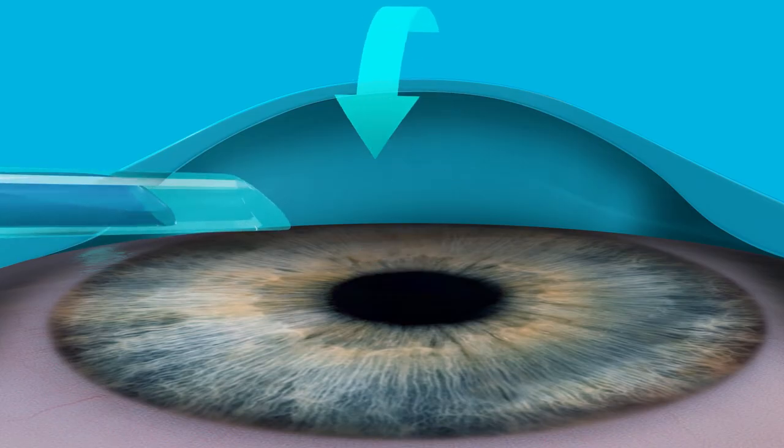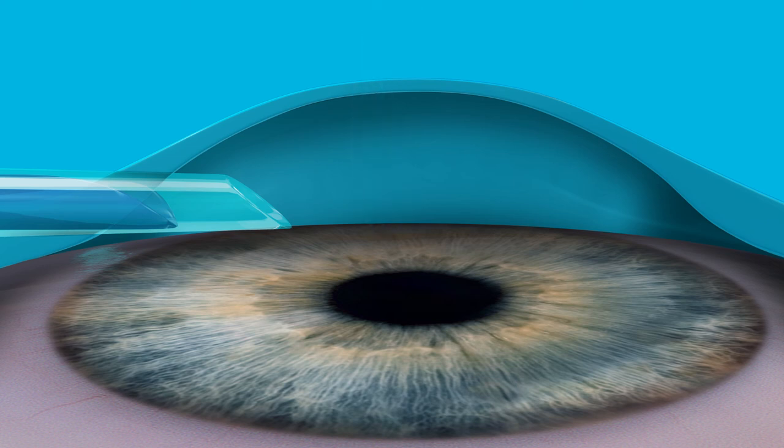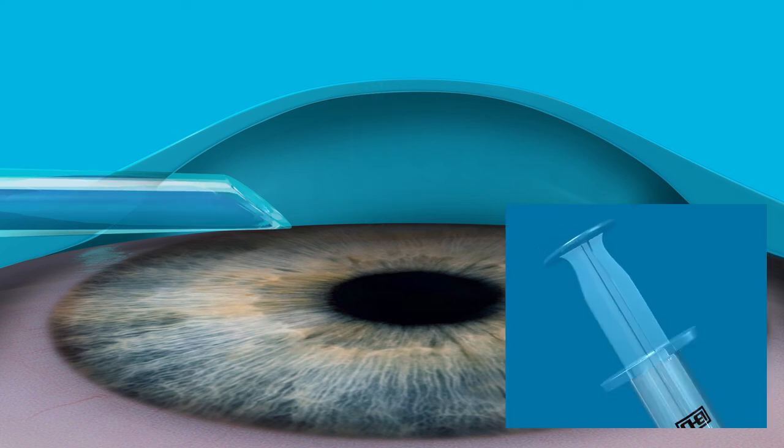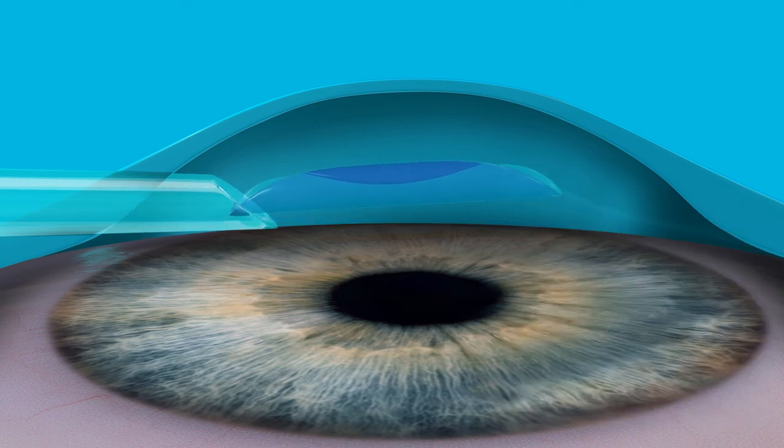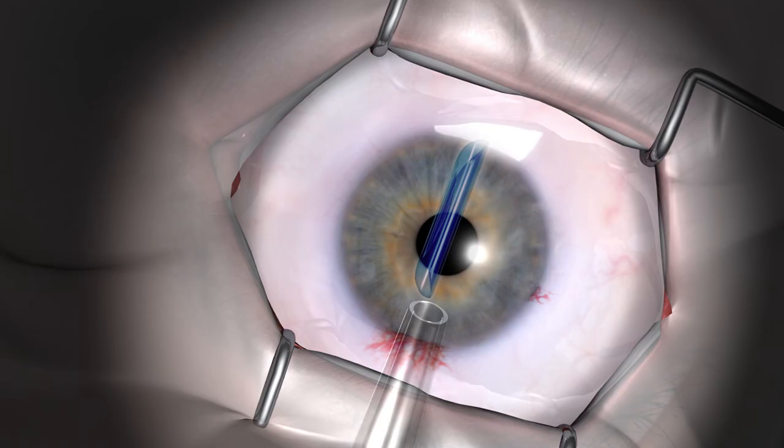Rotate the cannula so the bevel is up. Deploy the graft by gently depressing the syringe plunger in short bursts versus a steady push. Visualize the graft as it moves into the anterior chamber.